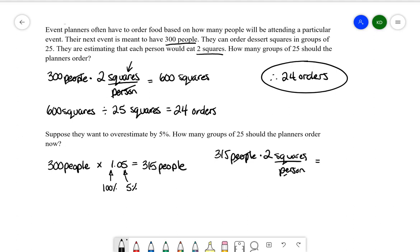And like before, people and people are cancelling, and then multiplying that out, I get 630 squares. So then next, what we want to do is go 630, and we're going to divide by 25, just like we did before. And 630 divided by 25 will give us 25.2. Of course, we can't have 25.2 orders. I need to go either 25 or 26. So just to make sure we have enough, we would therefore want 26 orders.